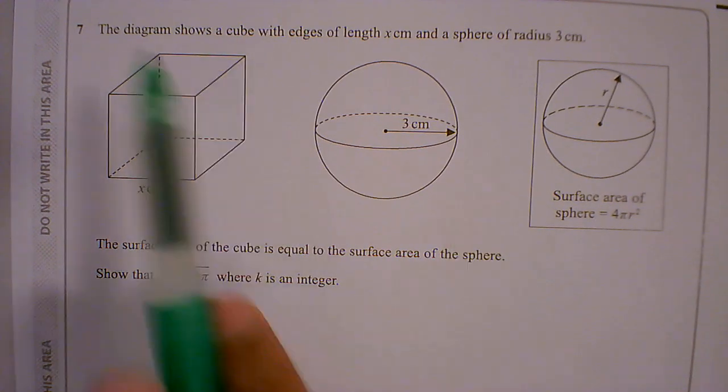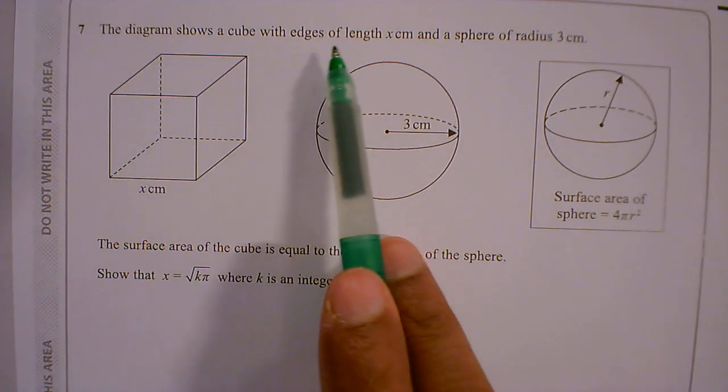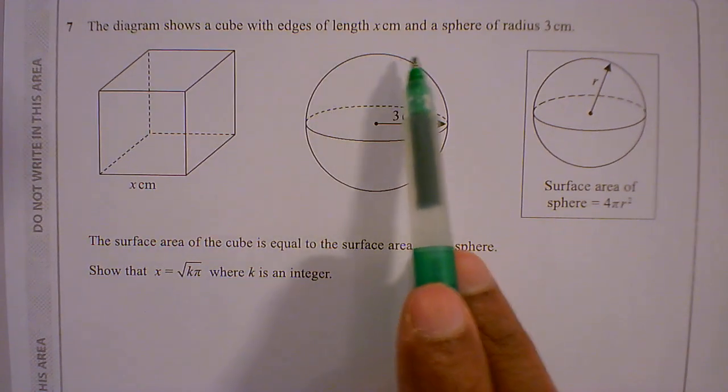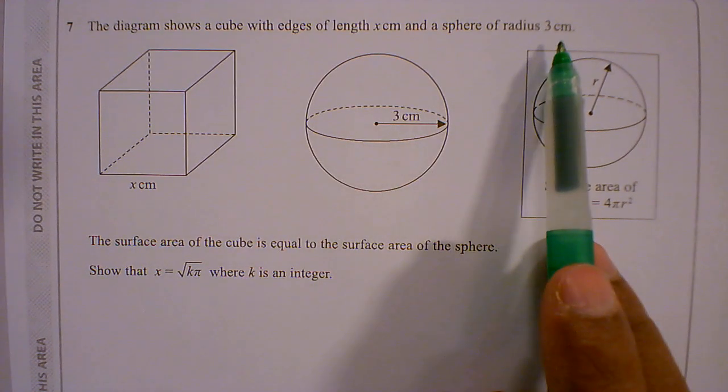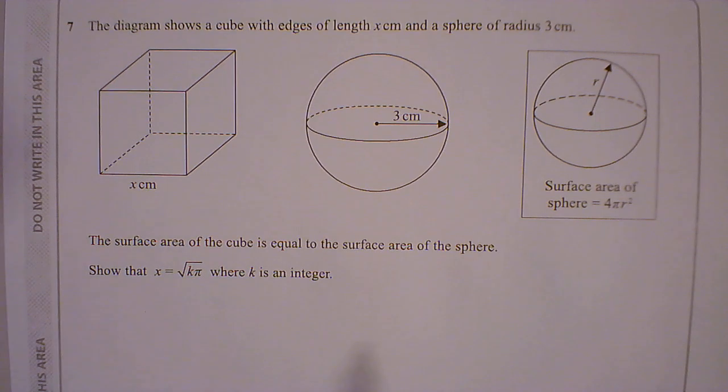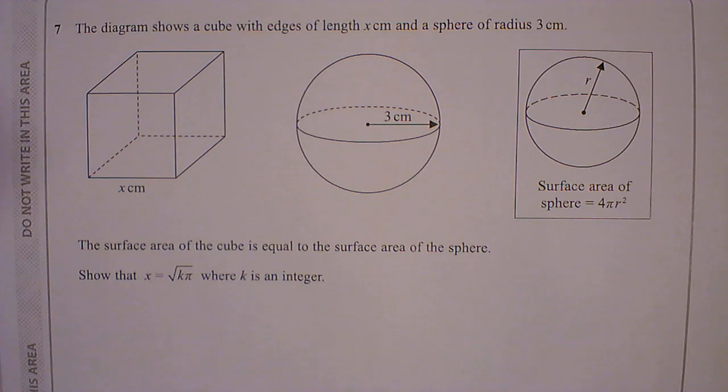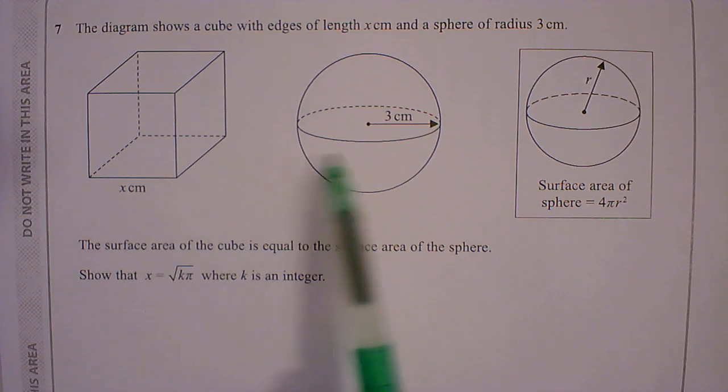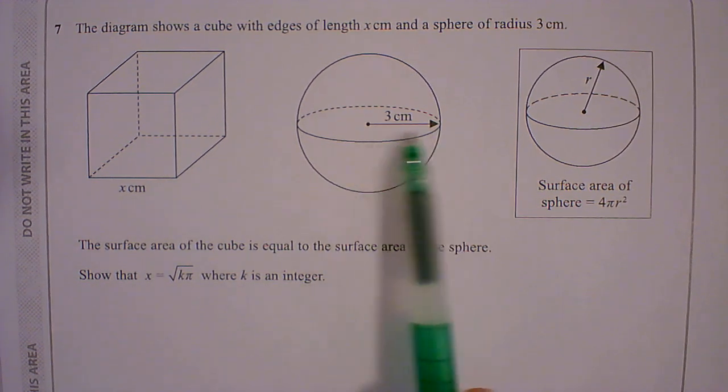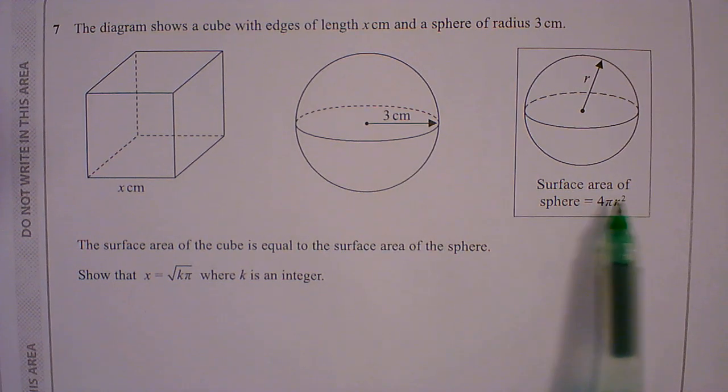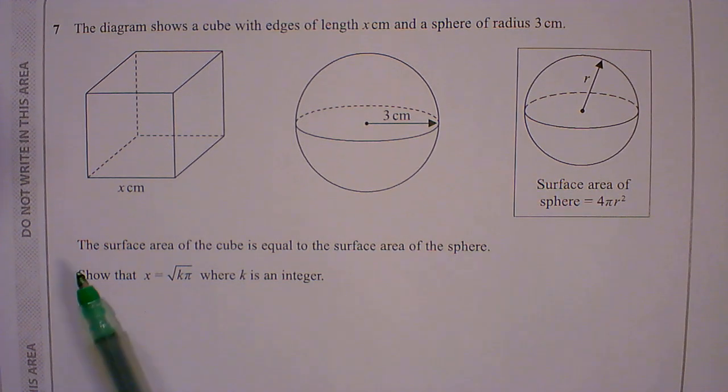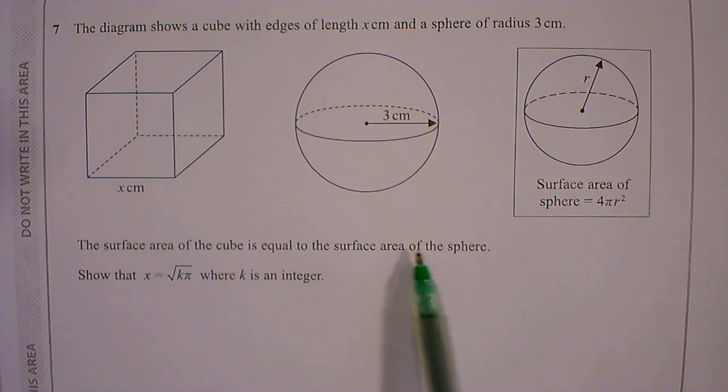Question 7. The diagram shows a cube with edges of length x centimeters and a sphere of radius 3 centimeters. So we've got a cube x centimeters, a sphere with radius 3 centimeters. Surface area of a sphere is 4πr². The surface area of the cube is equal to the surface area of the sphere.